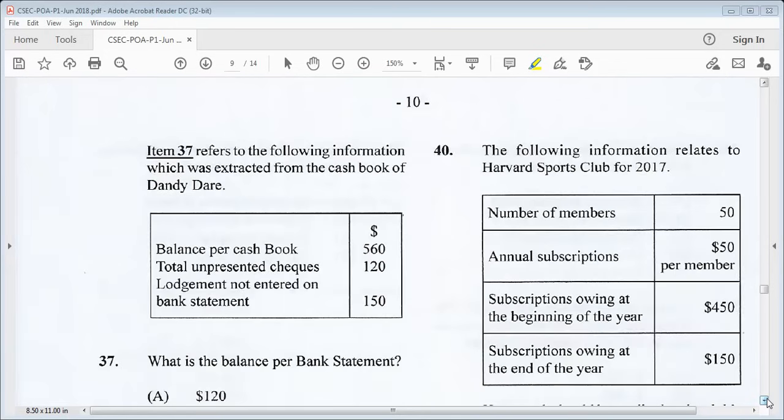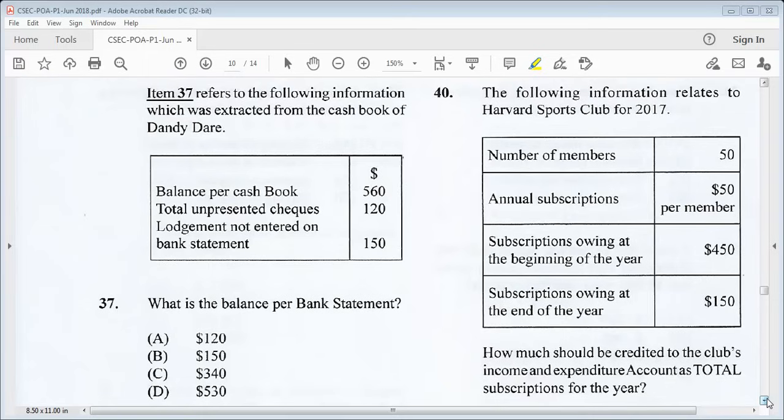Let's go on to 37. Item 37 refers to the following information, which was extracted from the cash book of Dandy Deer. We have balance per cash book $560, total unpresented checks $120, lodgement not entered on bank statement $150. What is the balance per bank statement? Our balance per cash book is $560, then we add unpresented checks $120. That's a total of $680, and then we less lodgement $150. When we deduct that $150 from $680, we get $530. D should be your answer.